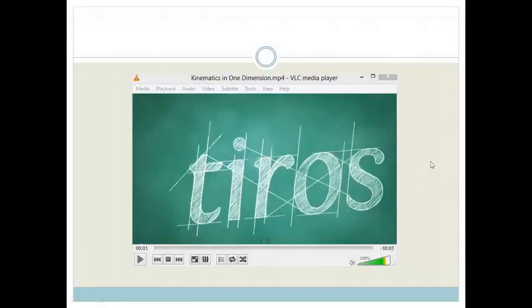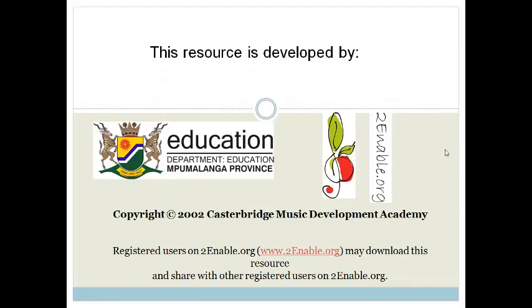So, Grade 10, what we have been looking at is motion in one dimension. And we've learnt about speed, distance, average speed, and average velocity. I know that this video went onto graphs. I don't want you to panic about that. We will be covering the graphs in more detail in the next section. Right, that is all for this lesson. Thank you, Grade 10. Have a wonderful day.